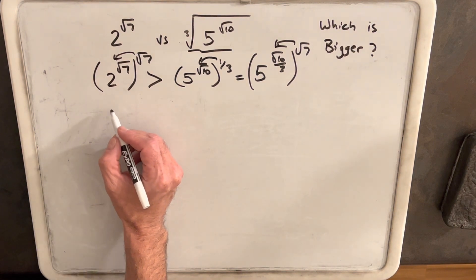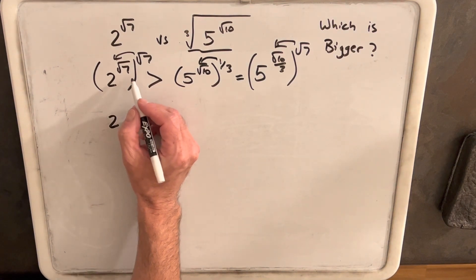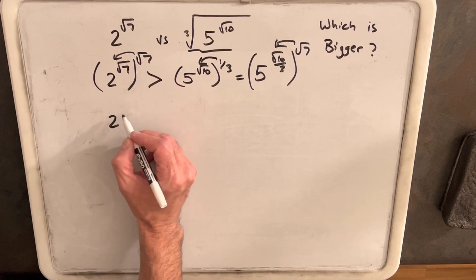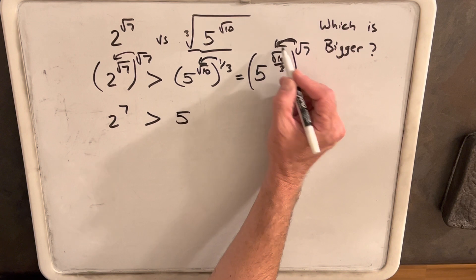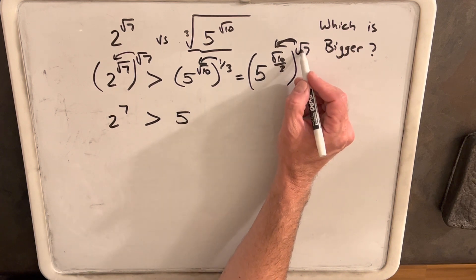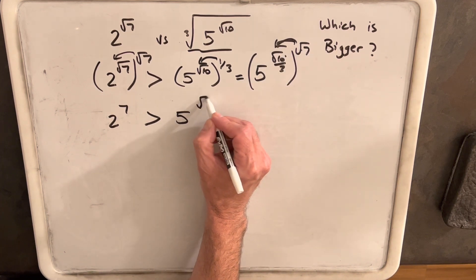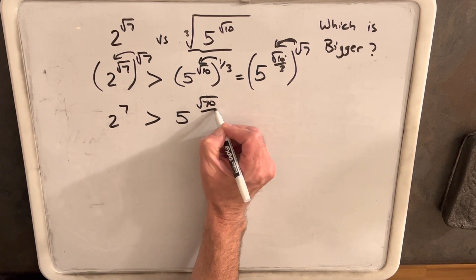So we'll have, on the left side 2, square root of 7 times square root of 7 is just going to be 7. We're hoping that's going to be greater than 5. Multiplying this inside, we're going to have square root of 7 times square root of 10 is square root of 70. All over 3.